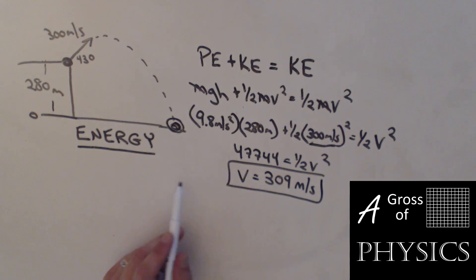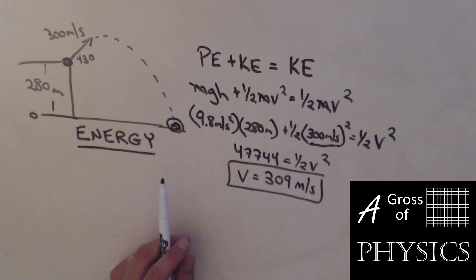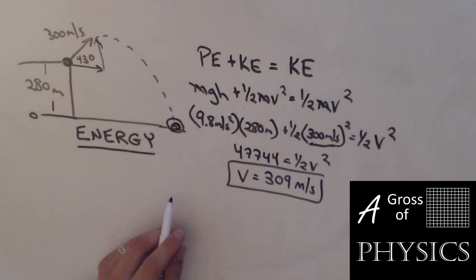Much less work using energy as a consideration because we only worry about the speed, not the velocity. So the scalar aspect of kinetic energy can make some problems a lot easier. We're not as angry when we see angles, and we don't have to break the legs of the vector.